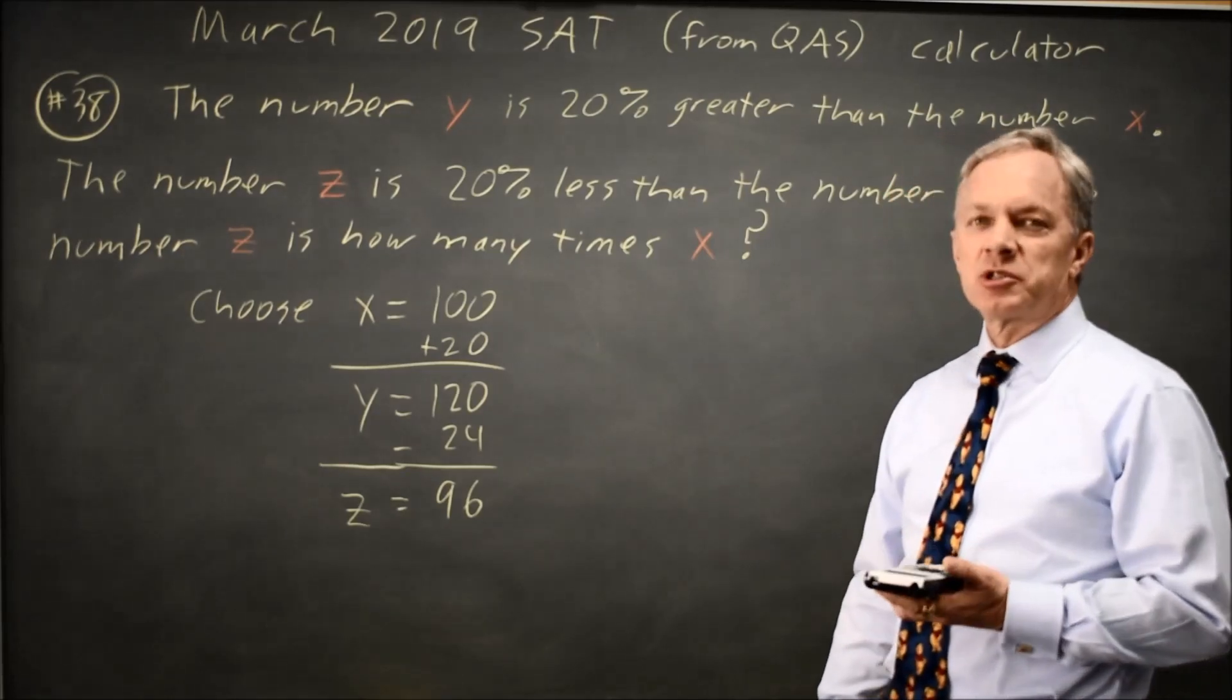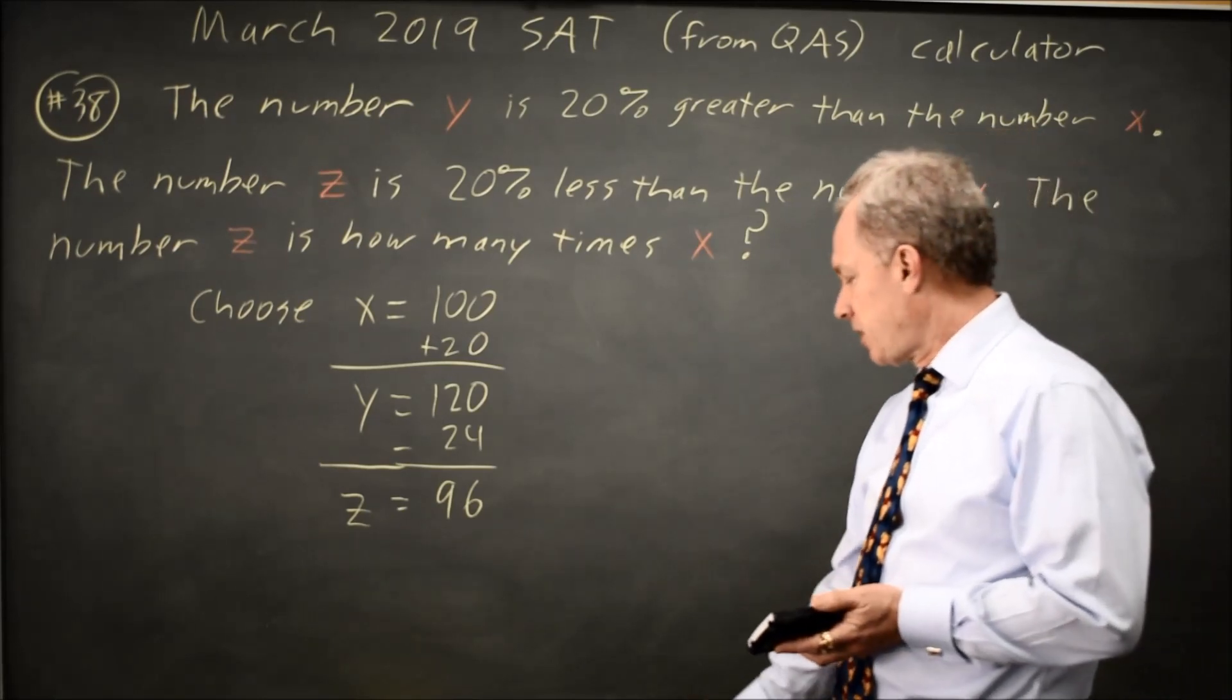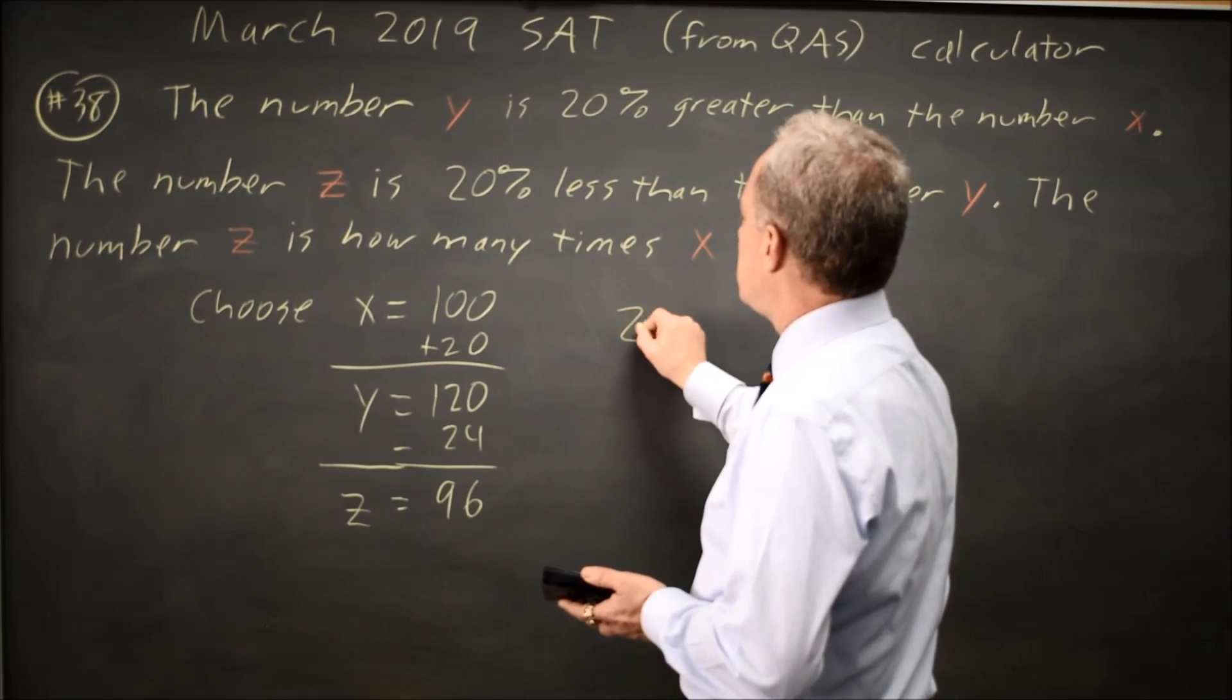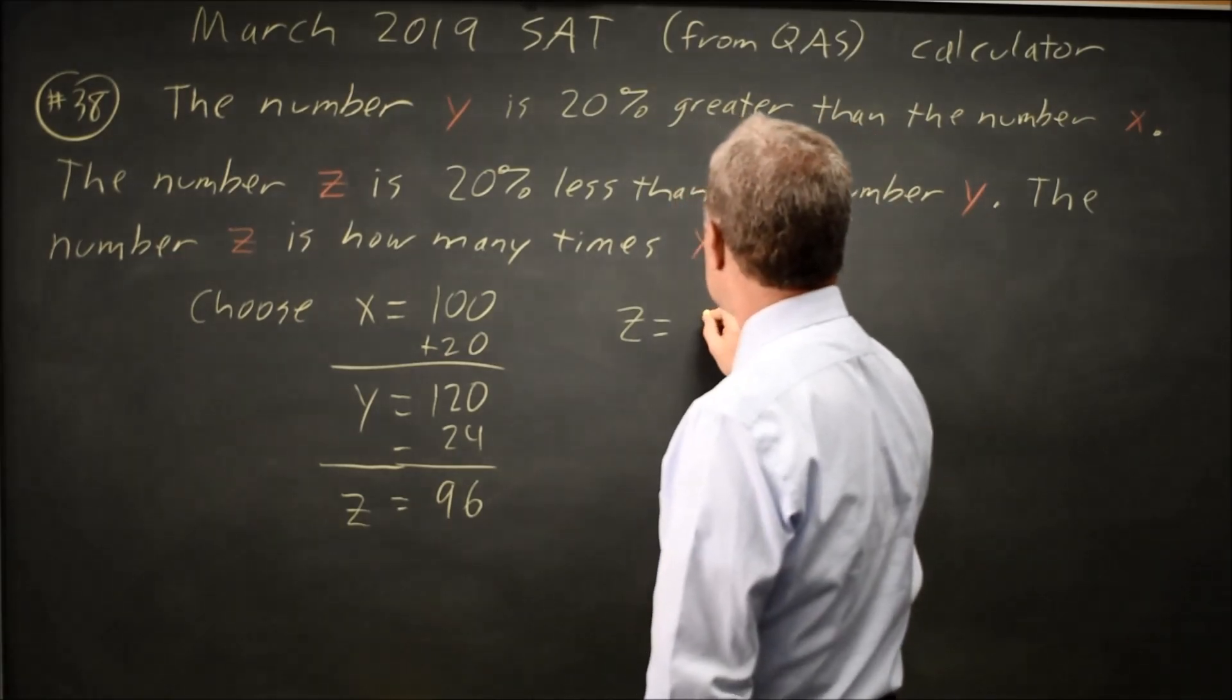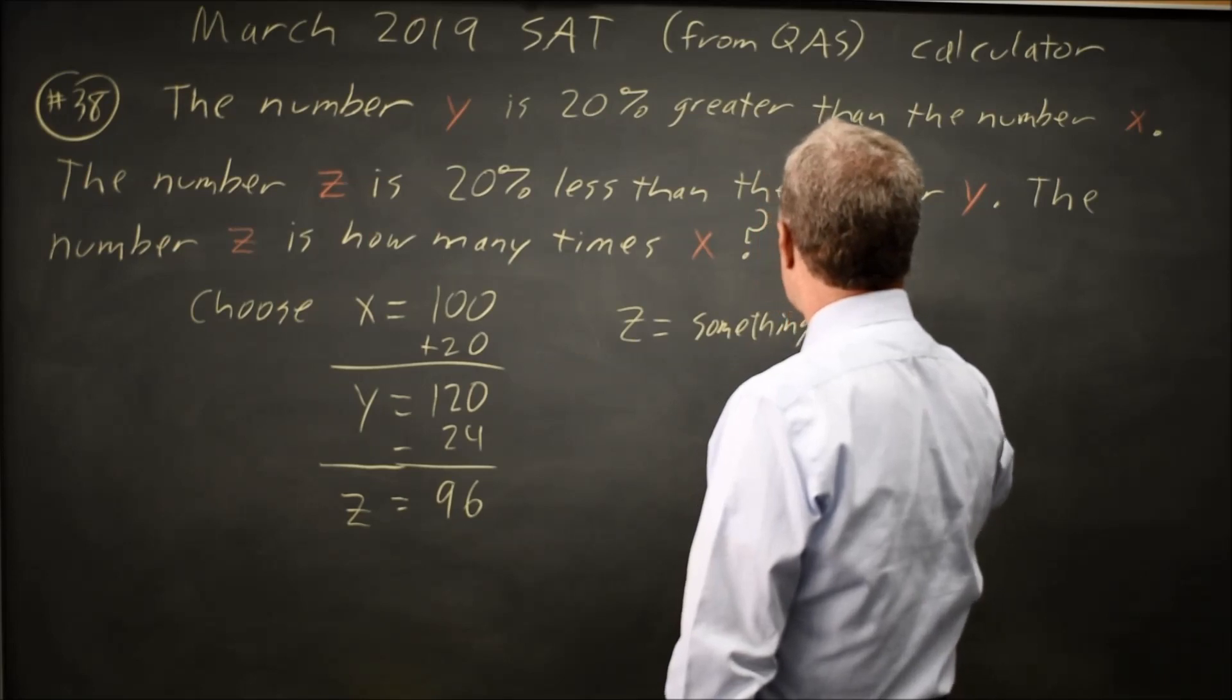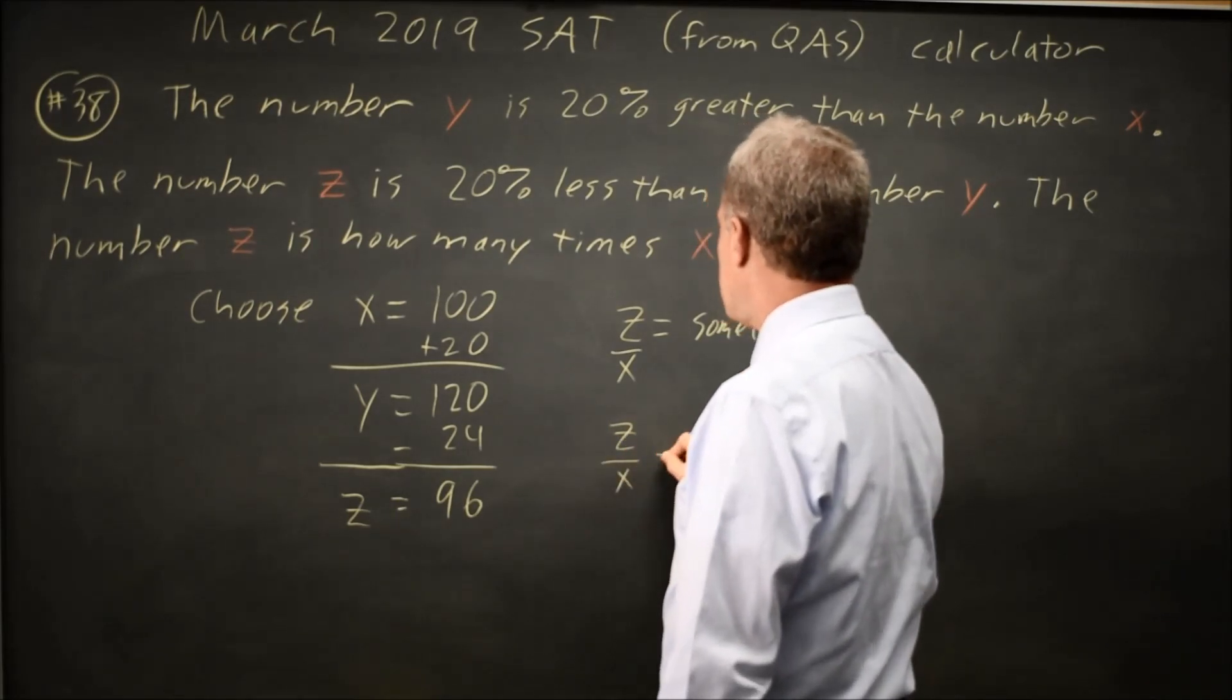Now that's the value for the numbers I made up, but since this has an answer, no matter what numbers I make up, I should get the same value of the ratio. Z equals some number times X and if I divide both sides by X, I get Z over X equals something,